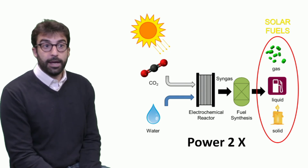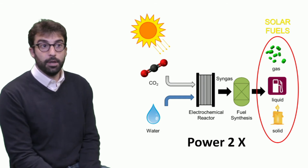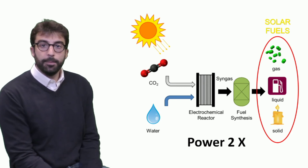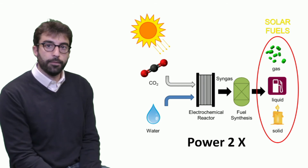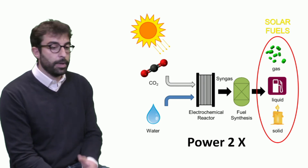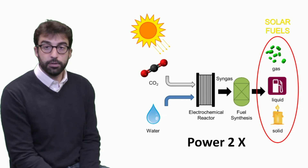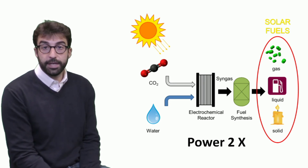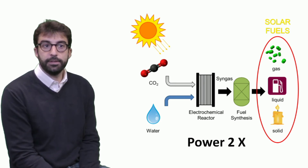Looking at the overall system, we can feed renewable energy into the electrolyzers along with primary sources — carbon dioxide and water, which become steam inside the high-temperature electrolyzer. The syngas produced can then feed a fuel synthesis reactor — based on reactions generally called Fischer-Tropsch — to produce various fuels: gas products such as methane, liquid products such as gasoline, or even solid products.